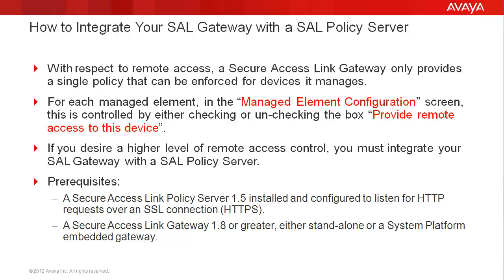You must meet the following prerequisites: a Secure Access Link Policy Server 1.5 installed and configured to listen for HTTP requests over an SSL connection, and a Secure Access Link Gateway 1.8 or greater, either standalone or a system platform embedded gateway. For details on how to install the SEL Policy Server or generate an SSL certificate to support HTTPS requests, search keyword Secure Access Link on our AvayaMentor YouTube channel, where you can find video tutorials for both of these prerequisite tasks.